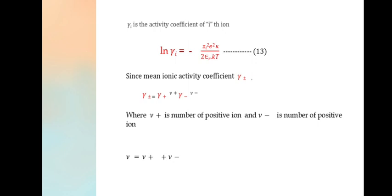Since mean ionic activity coefficient γ±^ν = γ+^ν+ · γ-^ν-, where ν+ is the number of positive ions and ν- is the number of negative ions, ν = ν+ + ν-.